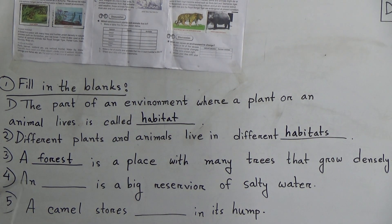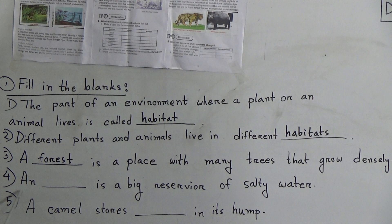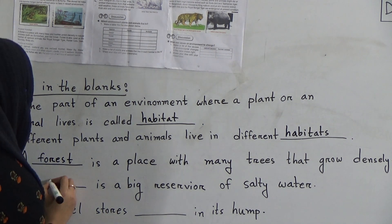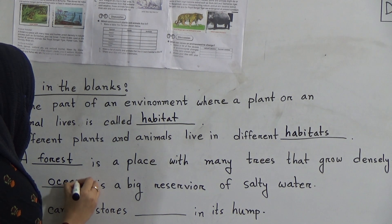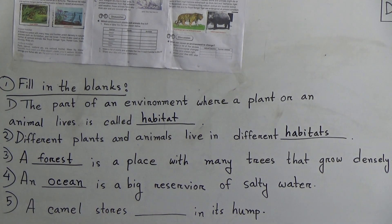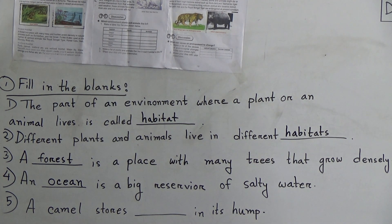Number four: a dash is a big reservoir of salty water — the answer is ocean. Number five: a camel stores dash in its hump — the answer is fat.